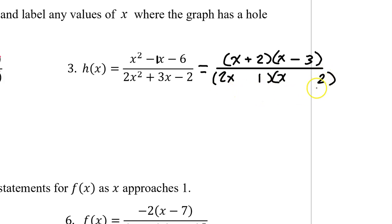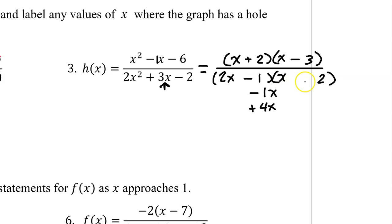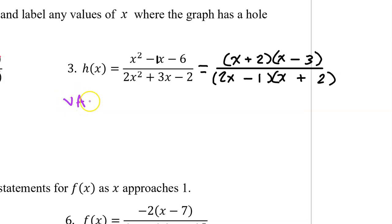Inner plus outer must equal the middle. Inner I have 1x, outer I have 4x. To make a middle of positive 3, I need a negative 1x and a positive 4x. So this gives me negative 1x and this gives me the positive 4x. The 2x minus 1 in the denominator does not cancel out with anything, so that tells us we have a vertical asymptote at x equals 1 half.